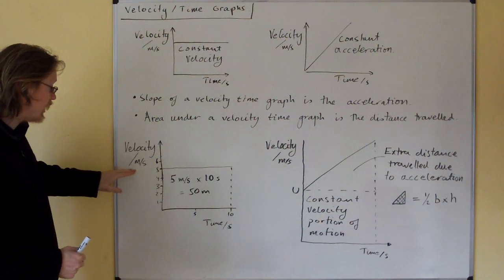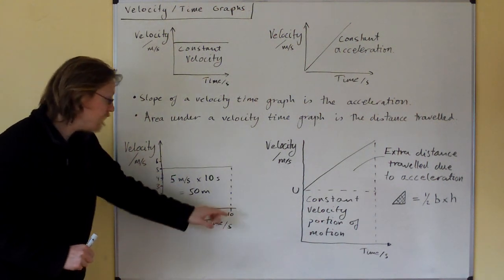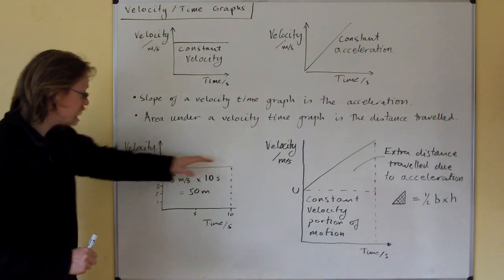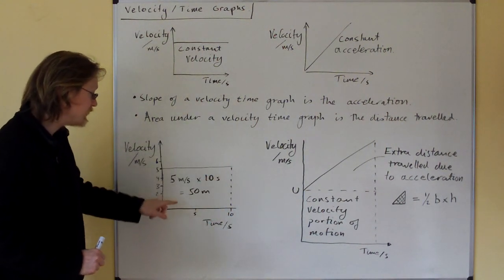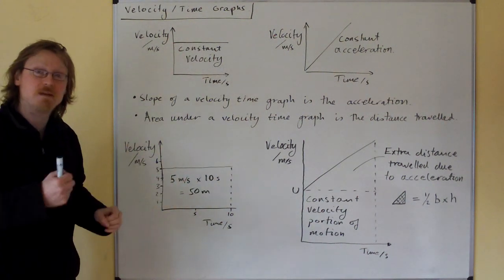So look here. Suppose we have a velocity of 5 meters per second, and we maintain that velocity for 10 seconds. So we have 5 meters per second, a constant velocity, for 10 seconds. That's 5 meters per second times 10 seconds equals 50 meters. So the area under this graph is 50 meters of distance.